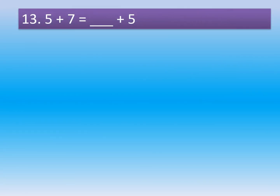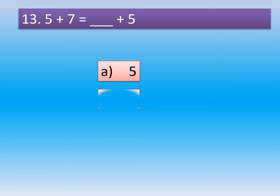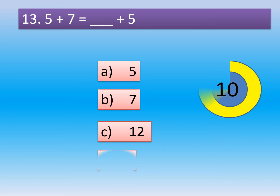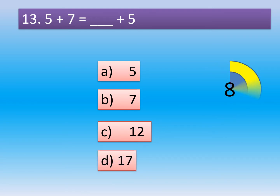Question number 13. 5 plus 7 is equal to dash plus 5. Option A: 5. Option B: 7. Option C: 12. Option D: 17.